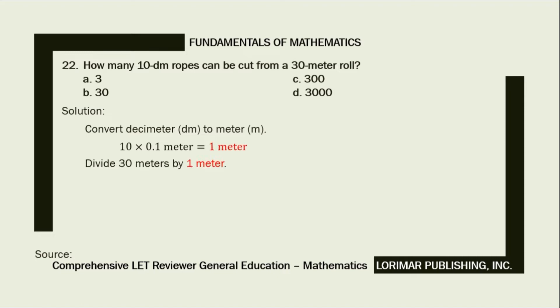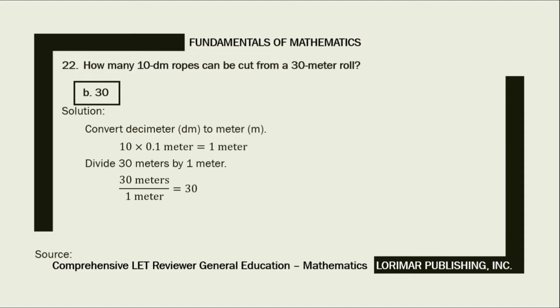Lastly, divide 30 meters by 1 meter. 30 meters divided by 1 meter equals 30. The correct answer is letter B, 30.